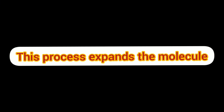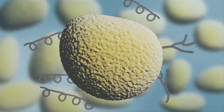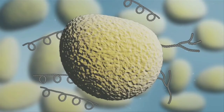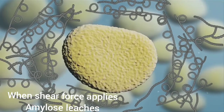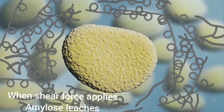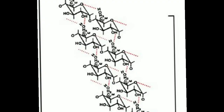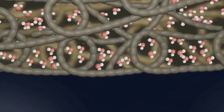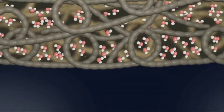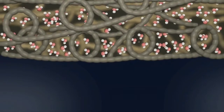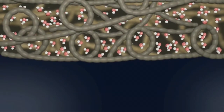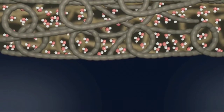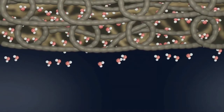This process expands the molecules, and as the starch molecule swells, some amylose chains leach out of the solution. The leached-out amylose binds to form a tangled meshwork, reducing the movement of water molecules. As the starch-thickened solution cools down, molecules move more slowly and get closer together.